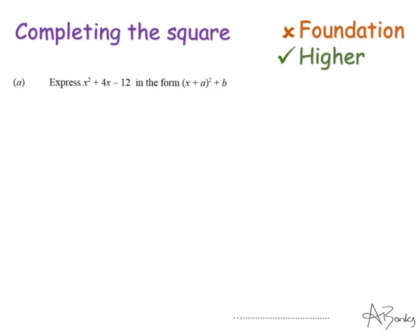This is the trick we have to know. If we look at the coefficient in front of the x, in this example it is positive 4. If I half that, so that is positive 2, and I put that in a square bracket, it will almost give me my expression.